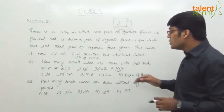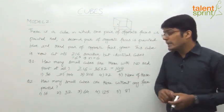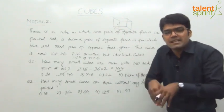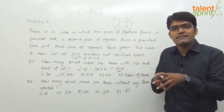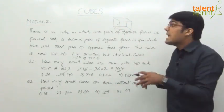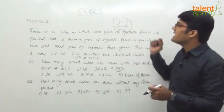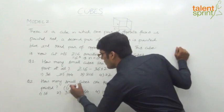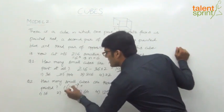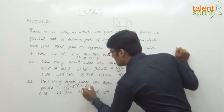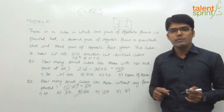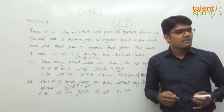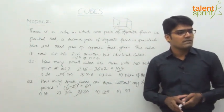Now, how many small cubes are there without any face painted? Without any face painted means what is inside the larger cube — you go one level inside. That means n minus 2, whole cubed. What is n in our case? 6. So the answer is 6 minus 2, whole cubed — that is 4 cubed, which is 64. The answer for question 2 is 64.